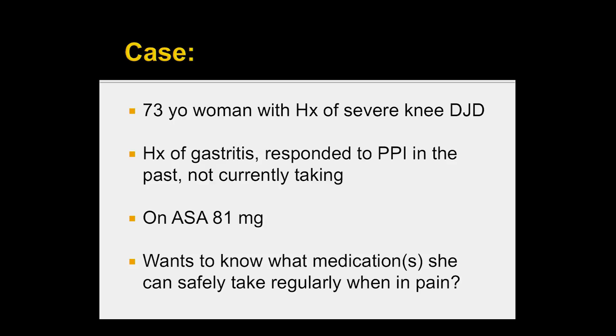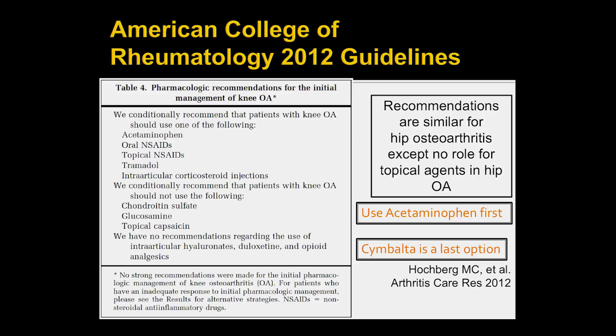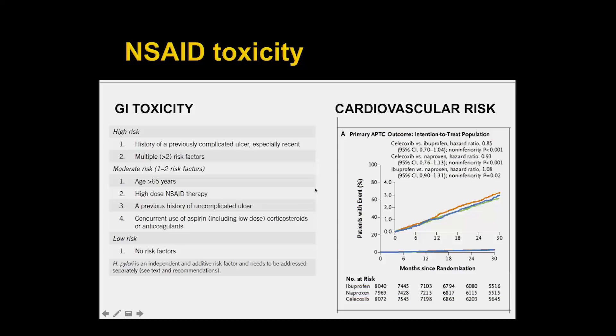The American College of Rheumatology guidelines list approved treatments for osteoarthritis. They include acetaminophen, oral NSAIDs like ibuprofen, topical NSAIDs like diclofenac gel, tramadol as a pain medication, and intraarticular cortisone injections. They recommend using Tylenol first because of the adverse effects of other treatments, and for patients who can't tolerate many of these, pain control medications like duloxetine — also an antidepressant used for fibromyalgia — are recommended. So you go from this very sophisticated model of a joint to really just treating pain.